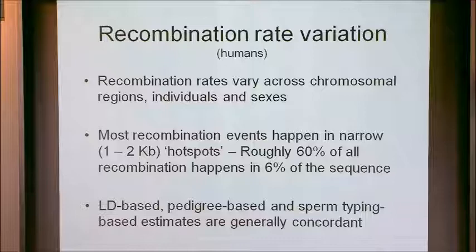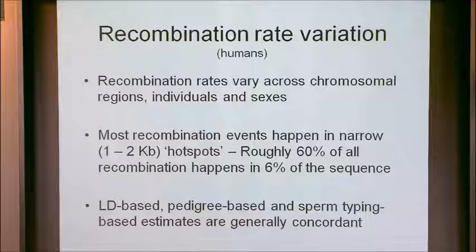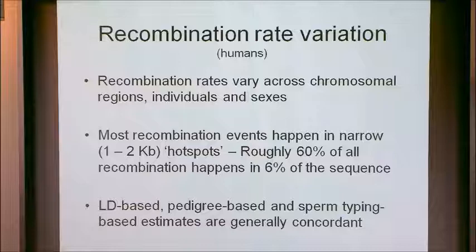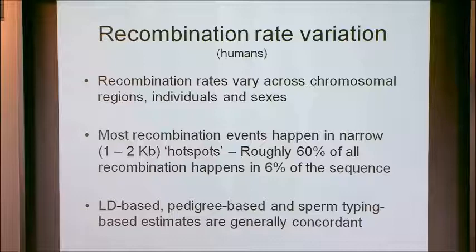In humans, recombination rates vary across regions of the genome, between males and females systematically, and even within individuals of the same gender. Further, as has been touched upon by previous speakers, recombination rates are not uniform — they vary in a specific way where most recombination events happen in a very small fraction of the sequence.